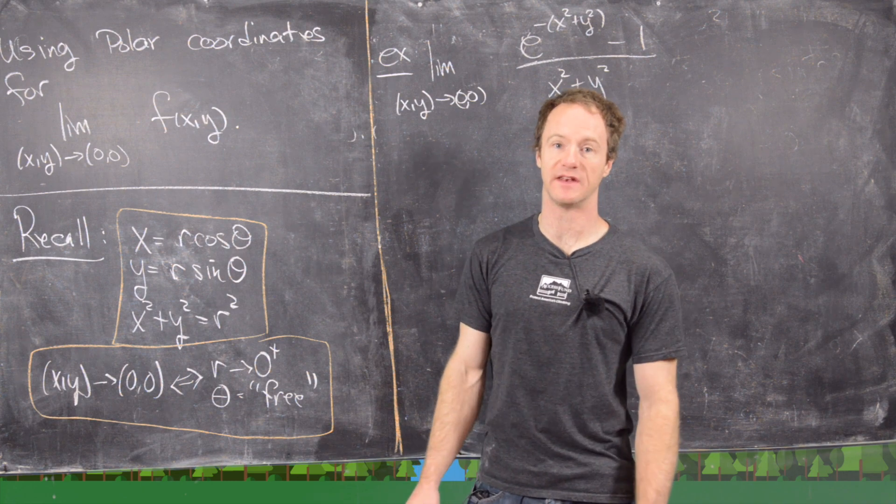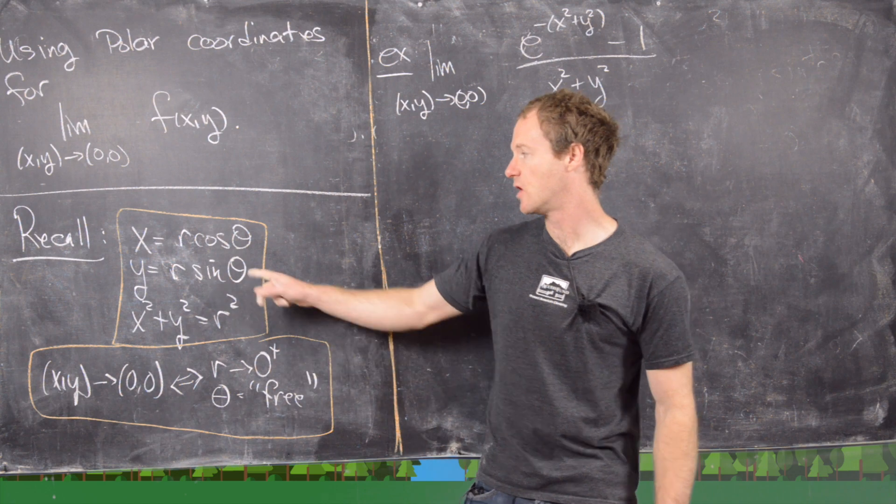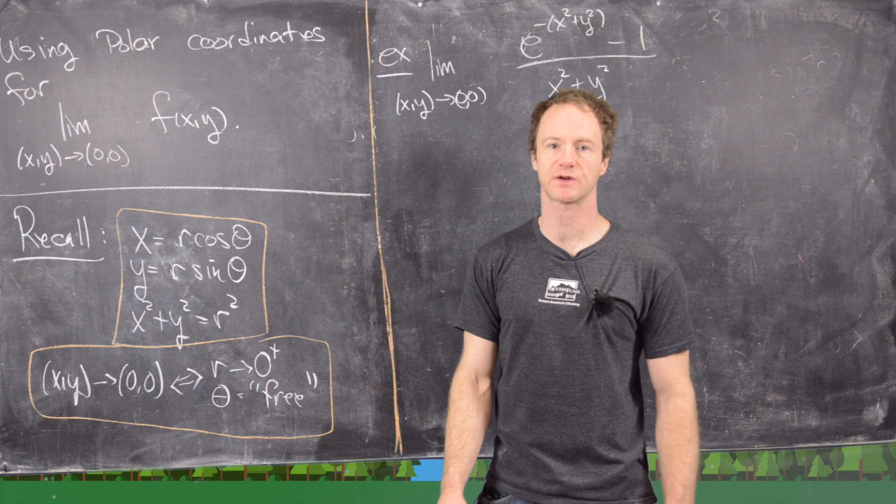Let's just recall the definition for polar coordinates. We generally set x equal to r cosine theta, y is equal to r sine theta, which makes x squared plus y squared equal to r squared.